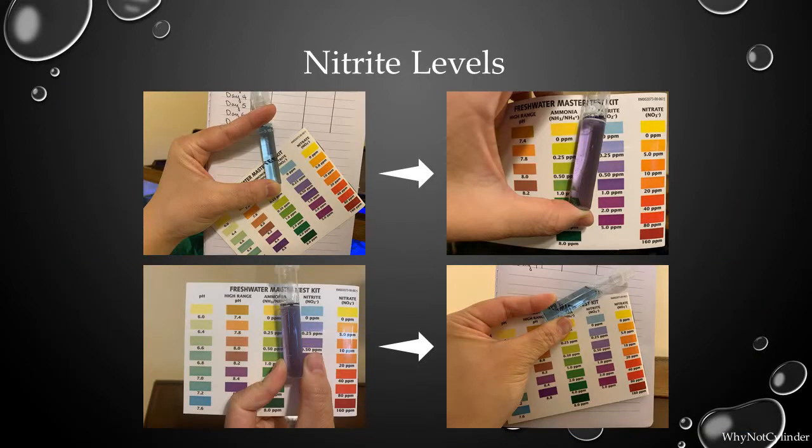As for your nitrite, it's normal to see zero in the beginning until your bacteria starts turning your ammonia into nitrite where you get the dark purple. Then you will get the light blue again when your beneficial bacteria has turned your nitrite into nitrate.